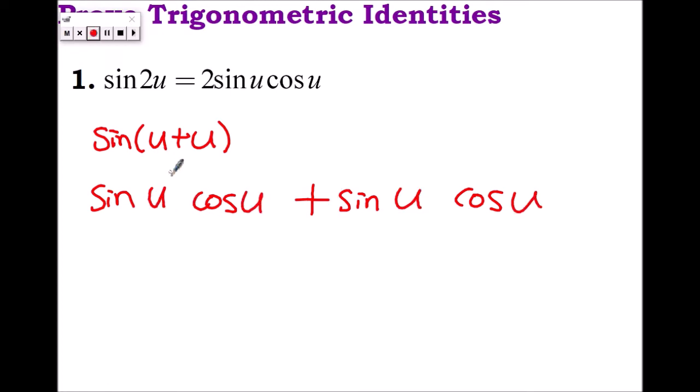So then what is sine u, cosine u plus sine u, cosine u? Two of them, right? 2, sine u, cosine u, which is what we are trying to prove. And please don't forget to write the last statement. Say these two are equal. Done.